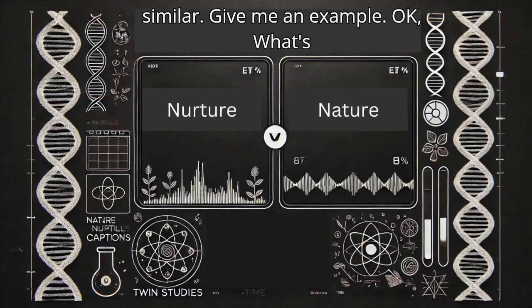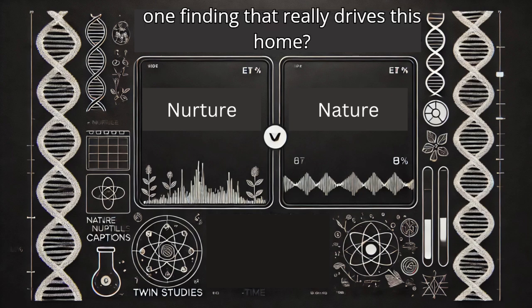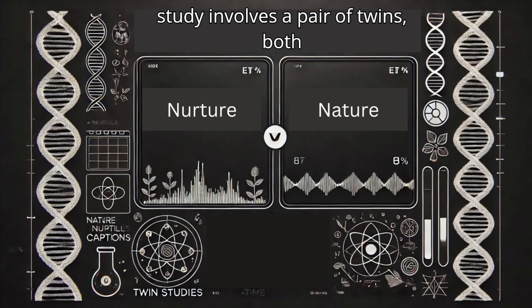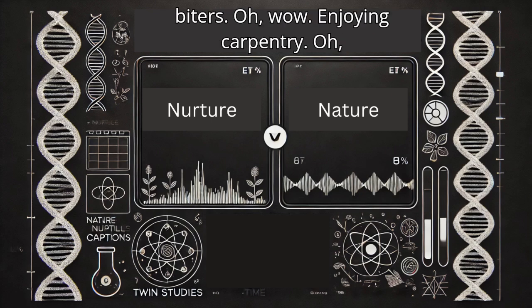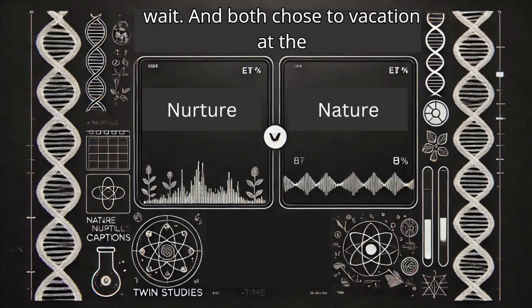Give me an example. What's one finding that really drives this home? One of the most famous examples from the study involves a pair of twins, both named Jim. Aside from both being named Jim, both were nail biters, enjoyed carpentry, and both chose to vacation at the same small beach town in Florida.